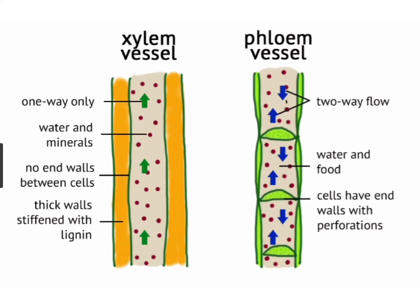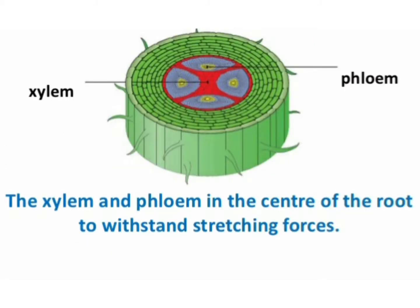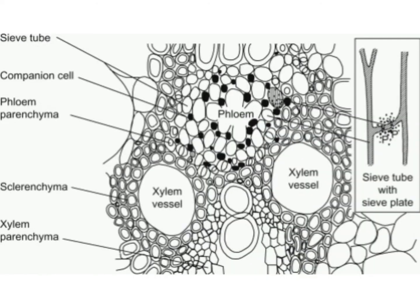Xylem and phloem are together known as the vascular bundle. When a plant stem is cut, you can see in the picture here, the xylem and the phloem in the center of the root withstand stretching forces. This is a graphic representation of xylem and phloem vessels. You can see the xylem vessels which are marked, and the phloem vessel which is in a flower-like structure.